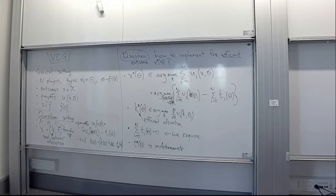Last week we considered the Mechanism Design problem in its most general form. In particular, we formulated what the environment is in which we operate, and this environment is what I will refer to from this point onwards as the general setting.